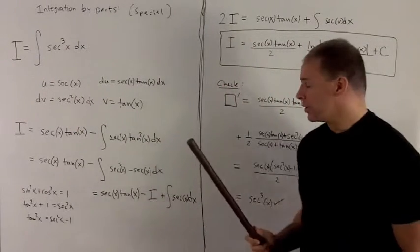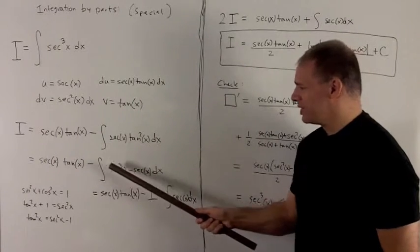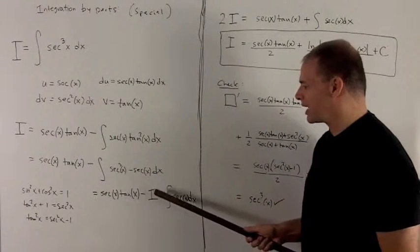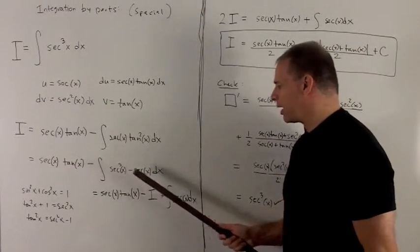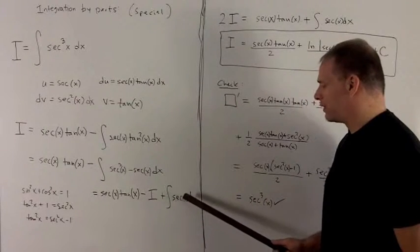I call it i, so that way I can group things later. So I'm just going to call this minus secant cubed x dx minus i, and then we also have to worry about a plus, because we have two minus signs, integral of secant x dx.